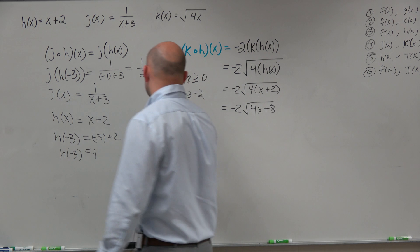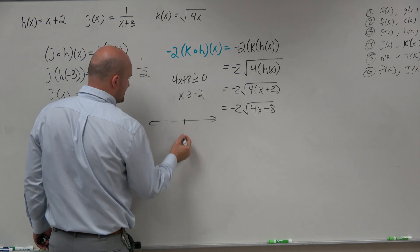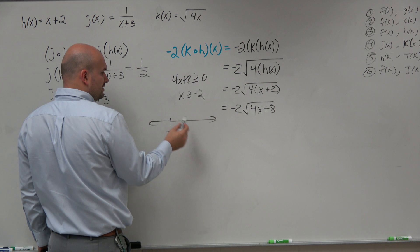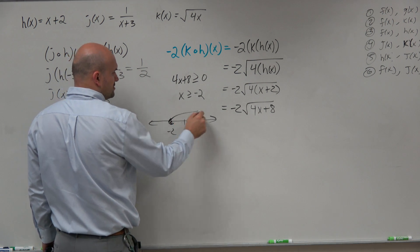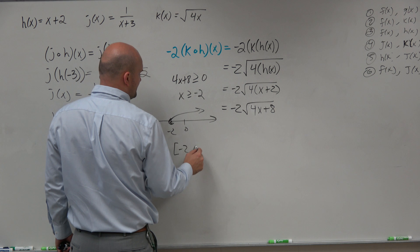So again, guys, just think about a number line. Here's 0, here's negative 2. x is all numbers greater than negative 2. Closed. It's going that way. So it's going to be negative 2 to infinity.